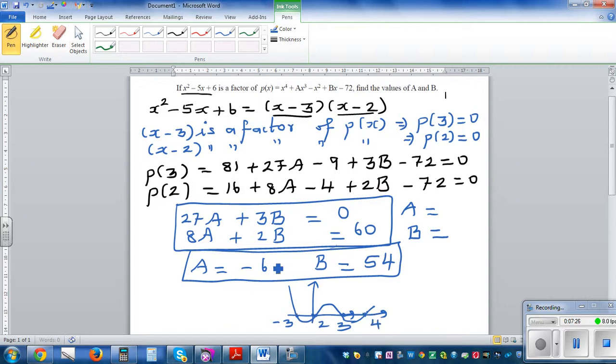The roots are 2 and 3, minus 3 and 4. If the question is to factorize this, the factors would be x plus 3 times x minus 3 times x minus 2 times x minus 4.